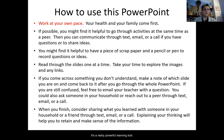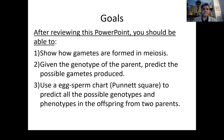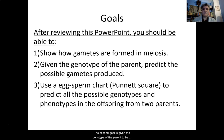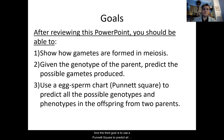It's a really powerful learning tool. The goals for lesson 4.1 are threefold. The first goal is to show how gametes are formed during meiosis. The second goal is, given the genotype of the parent, to be able to predict the possible gametes produced. And the third goal is to use a Punnett square to predict all the possible genotypes and phenotypes in the offspring from those two parents.